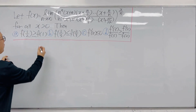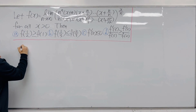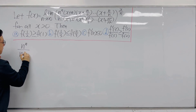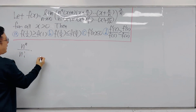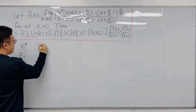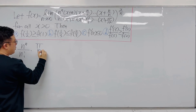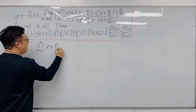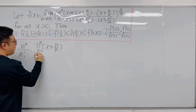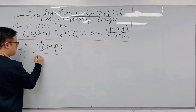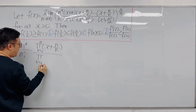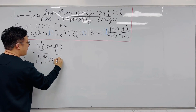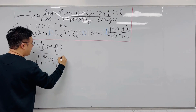We can rewrite this as: first, n to the power of n over n factorial, then times the product from k = 1 to n of (x + n/k), divided by the product from k = 1 to n of (x² + n²/k²).